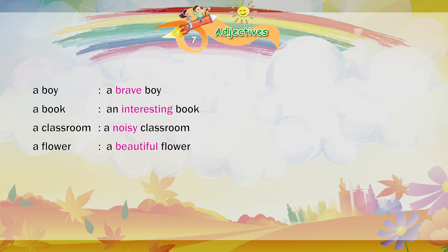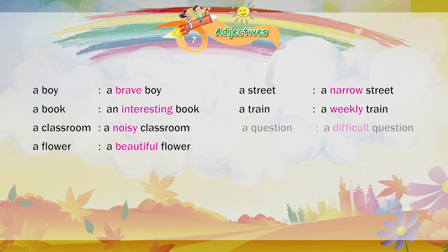A flower — a beautiful flower. A street — a narrow street. A train — a weekly train. A question — a difficult question. A stick — a long stick.